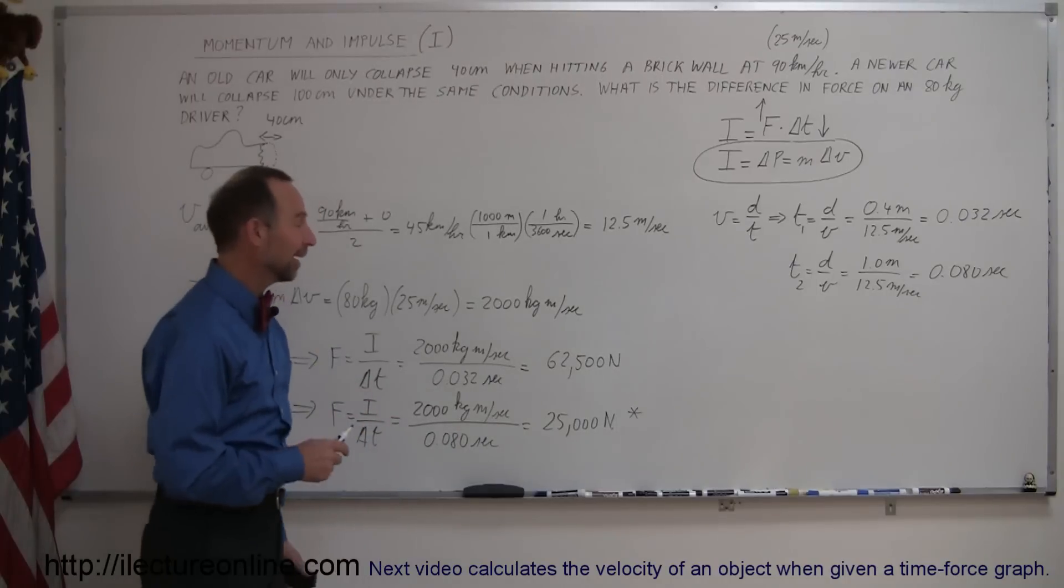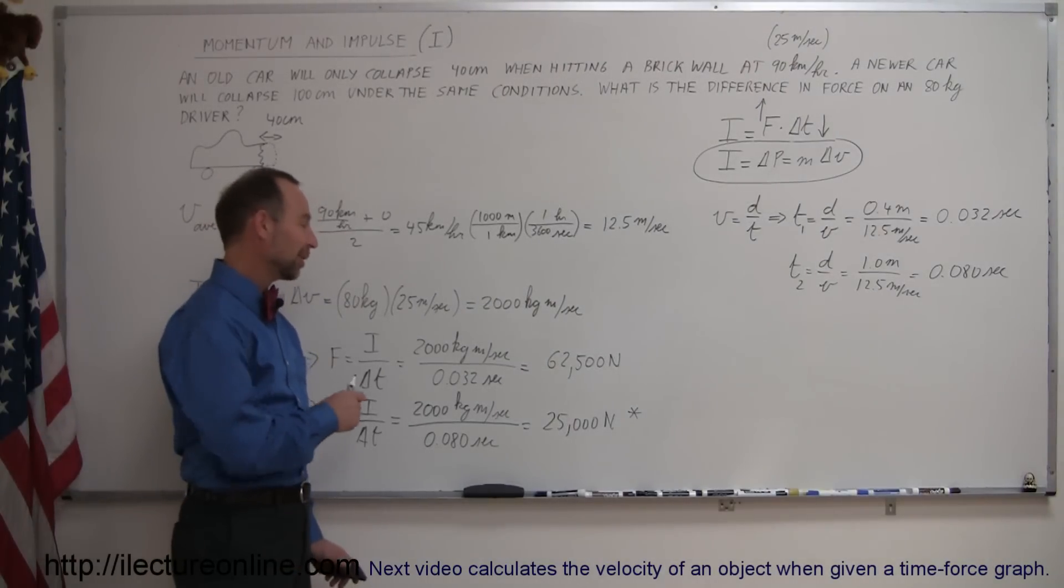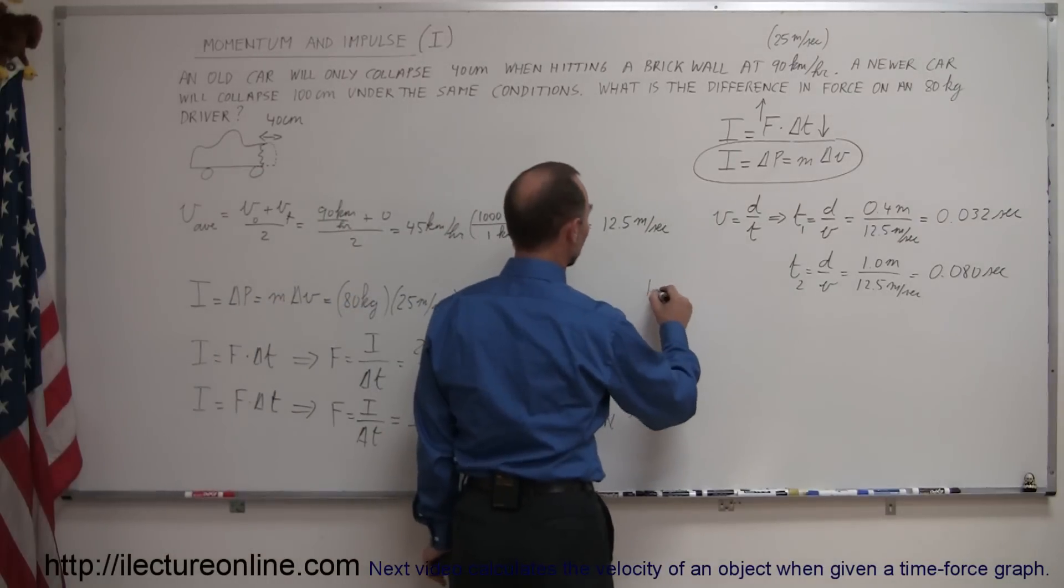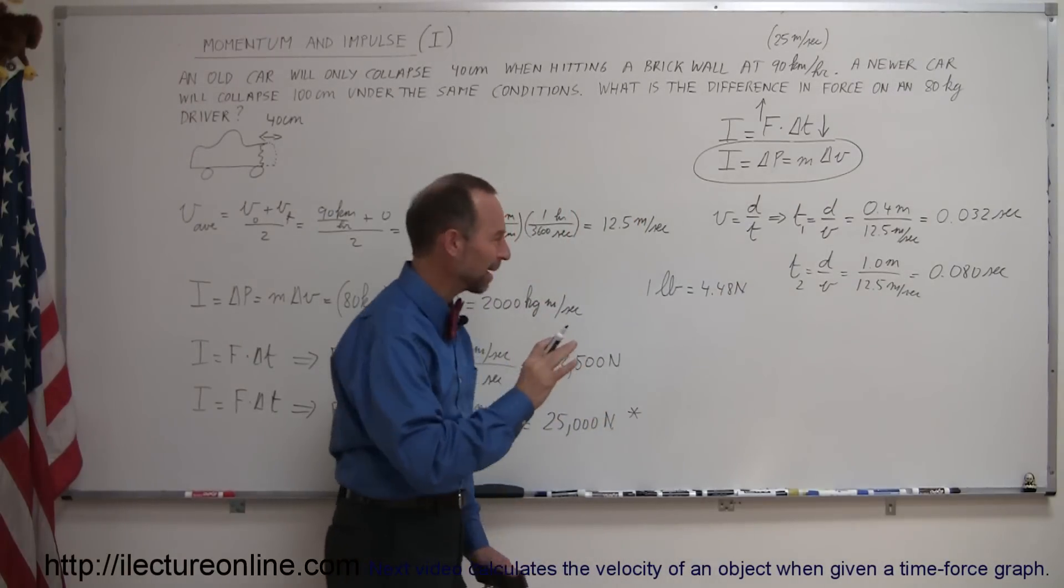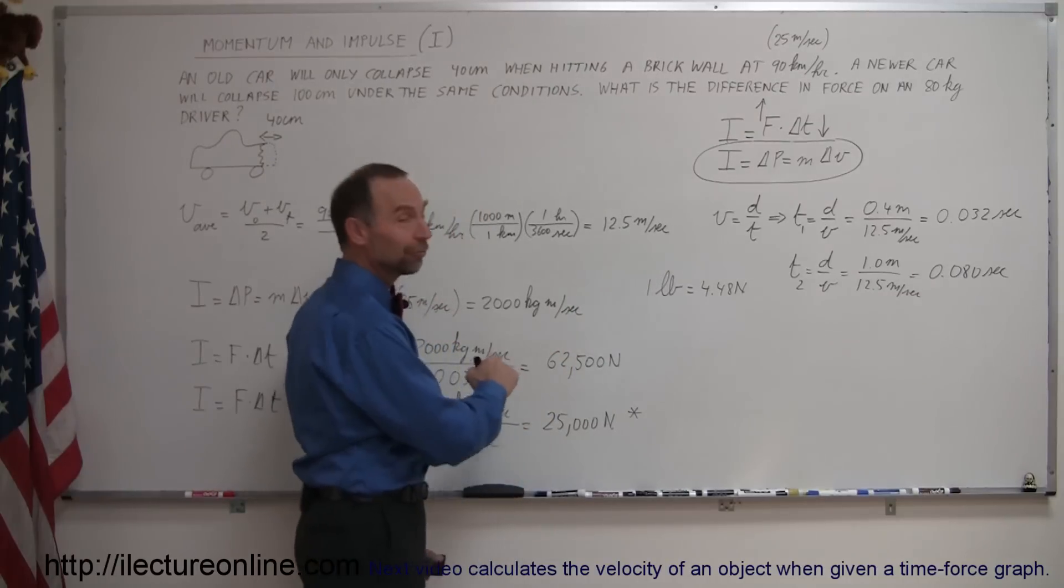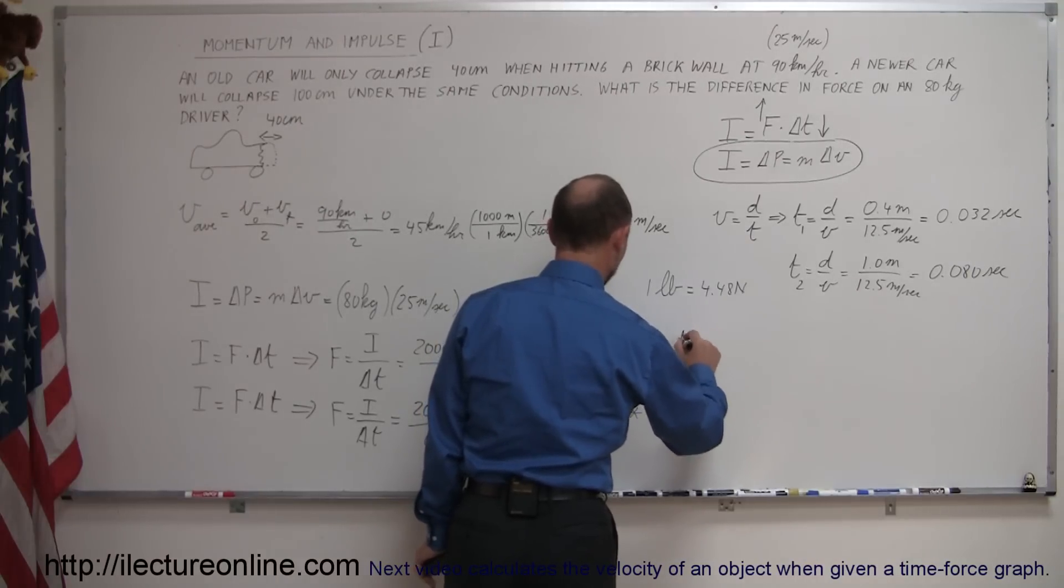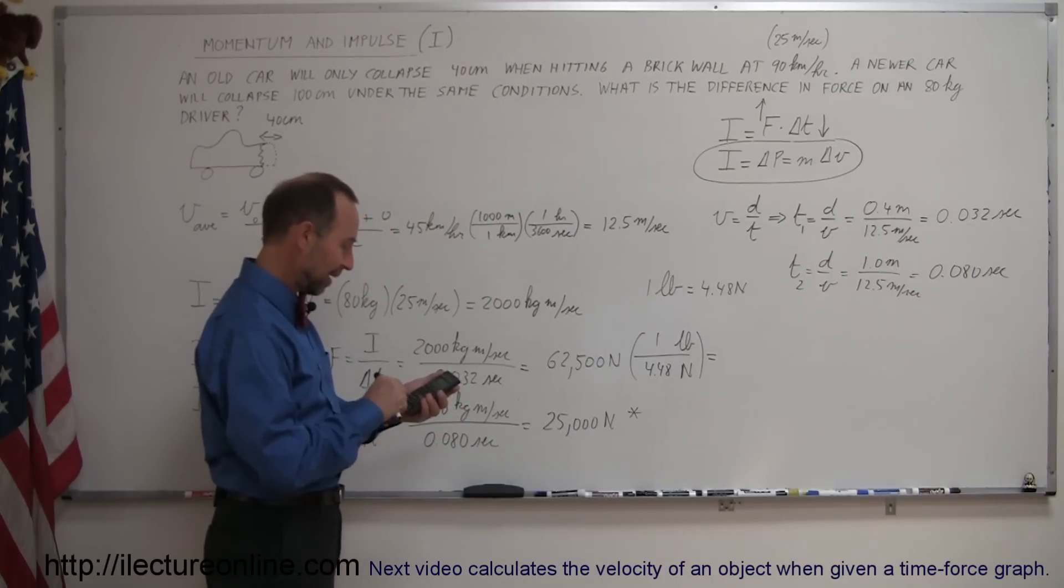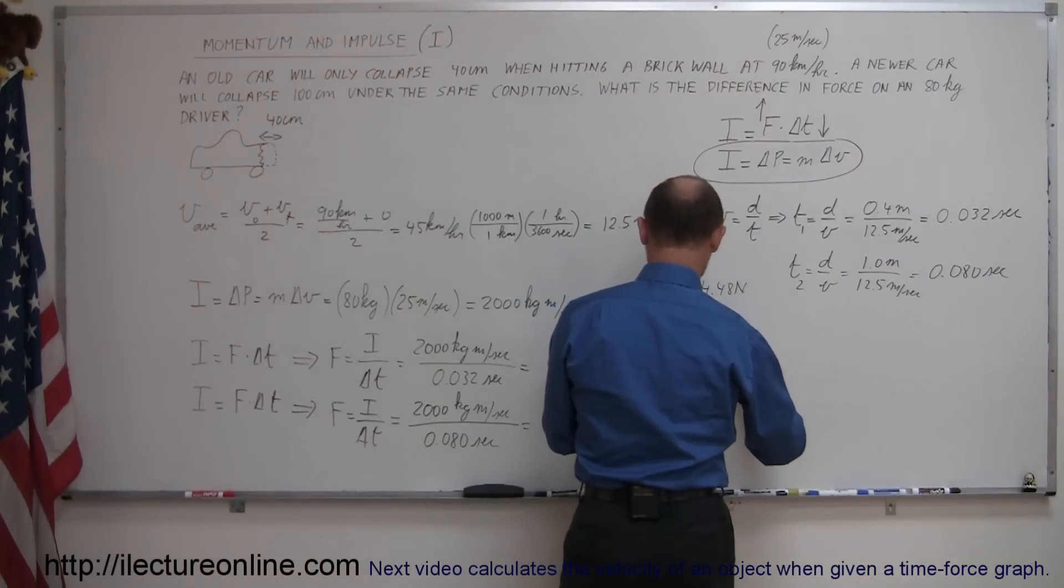I was just reminded that not a lot of people in certain countries of the world, like the United States, may not realize what 25,000 newtons of force is. So we have a nice little conversion. We know that one pound of force is equal to 4.48 newtons. I believe that's the conversion, I might be off by just a little bit, but it's close to that. So let's convert these forces to pounds of force. We want pounds instead of newtons, so one pound is 4.48 newtons. Let's take 62,500 and divide it by 4.48.